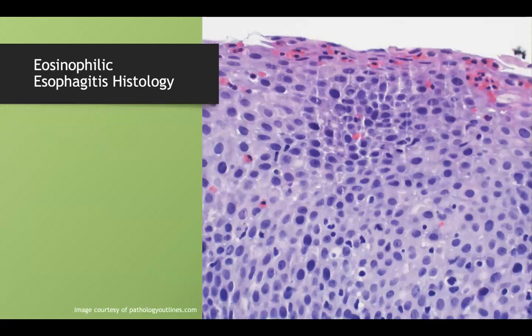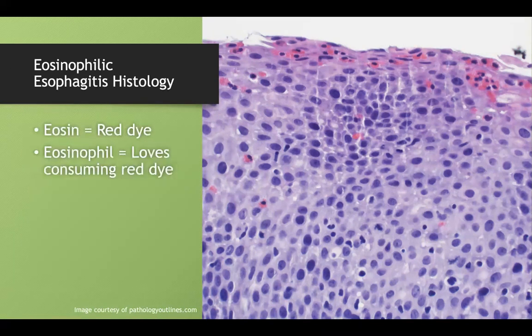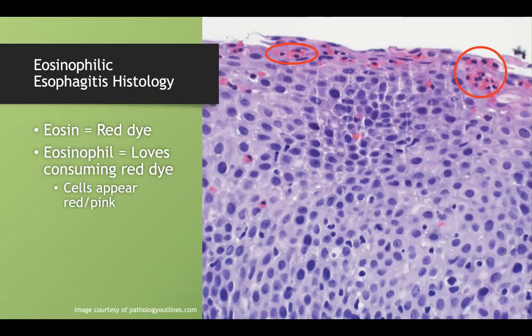Eosin is a red dye, and an eosinophil is a cell that loves consuming that red dye, so the cells are going to appear red or pink. You can see a ton of eosinophils in the top layer in someone with eosinophilic esophagitis.